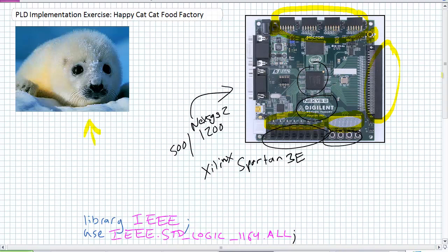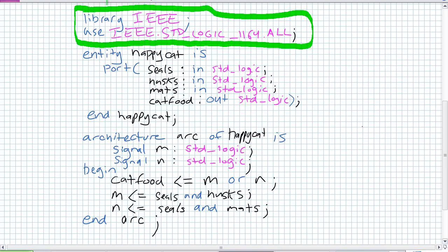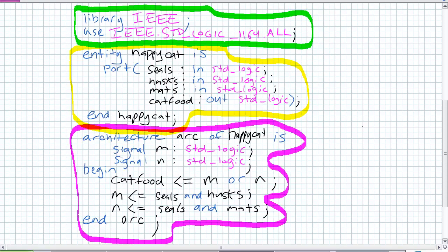That delicious little baby seal is going to be the prime ingredient for the Happy Cat Cat Food Factory. Here is our library statement — a library statement is the dictionary for the language I'm going to use: IEEE standard logic. If I were doing arithmetic operations I might need an arithmetic library, but I'm not. My entity statement describes my inputs and outputs externally. Finally, I've got my architecture statement, which defines the internal behavior. Additionally, I've used some internal signals in the architecture declaration section.